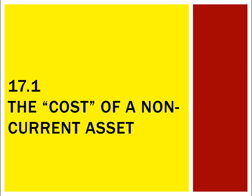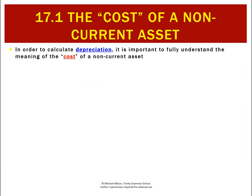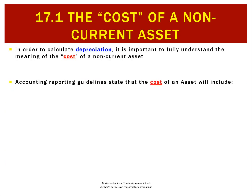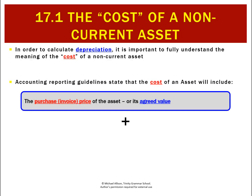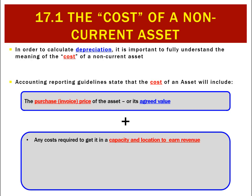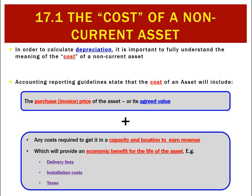Let's go over a topic we've already covered in unit 3 to refresh — the cost of a non-current asset. We need this figure to calculate depreciation. The cost is the purchase price of the asset, or if the owner is giving the asset to the business, it will be the agreed value, plus any cost required to get the asset in a capacity and location to earn revenue. That cost has to provide an economic benefit for the life of the asset, which includes things like delivery fees, installation costs, and taxes.